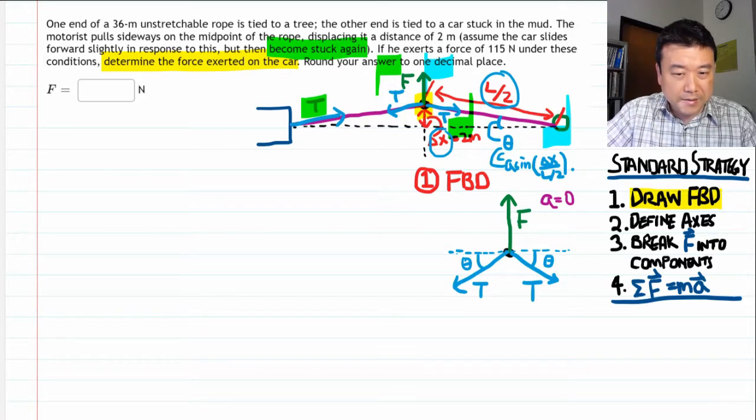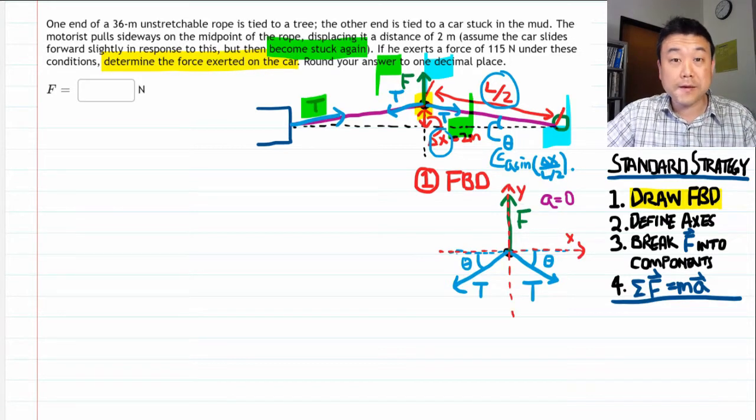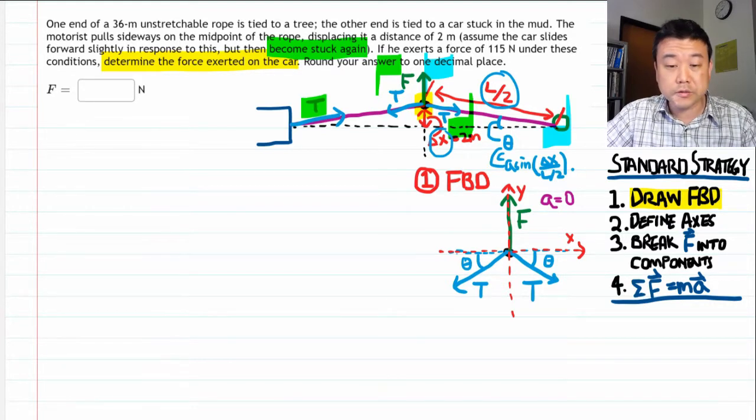So let me choose my axis so that the y axis is along the applied force F. That way, I don't have to decompose F. And it looks like even though I have two tension forces, if I decompose one of them, then the other one will look exactly the same.